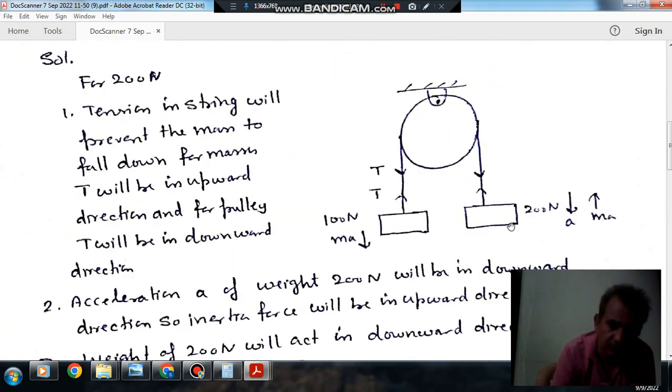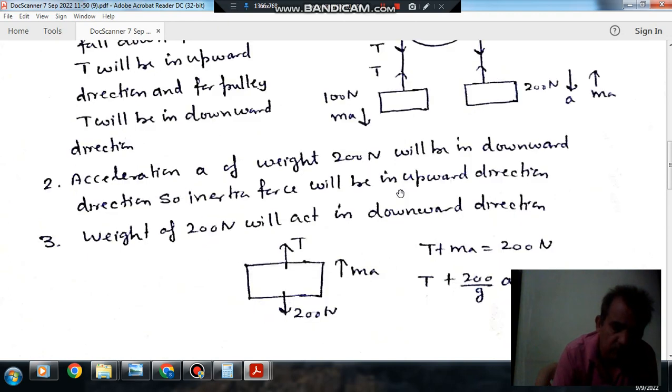Now consider the equation of this block. As this block is moving in downward direction, it will move in upward direction and inertia force will act in downward direction for this block. Its weight is 100N and tension is T.